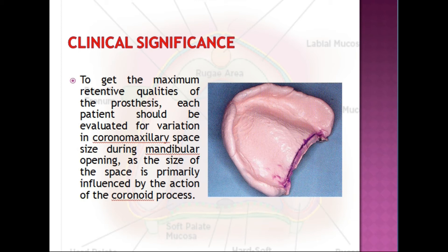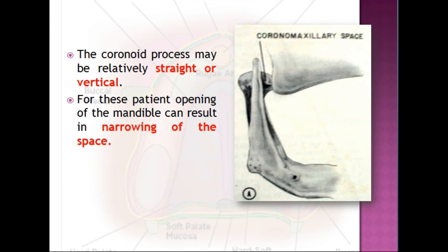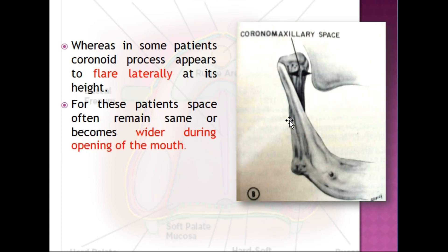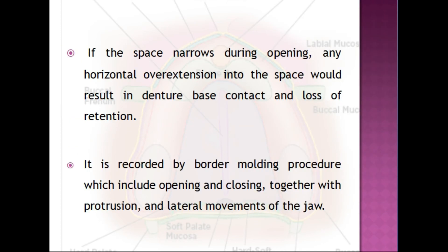The size of the coronomaxillary space is primarily influenced by the action of the coronoid process. If the coronoid process is relatively straight or vertical, opening the mandible can result in narrowing of the space — as can be seen in the diagram. In some patients, the coronoid process flares laterally at its height, and in these patients the space often remains the same or becomes wider during opening. If the space narrows during opening, any horizontal over-extension into the space would result in denture base contact and loss of retention. It is recorded by border molding with opening, closing, protrusion, and lateral movements.